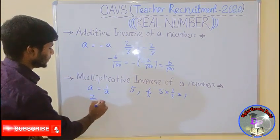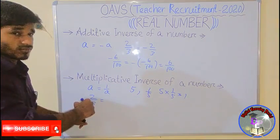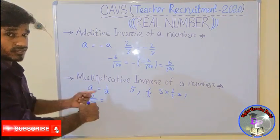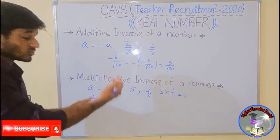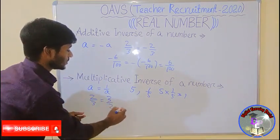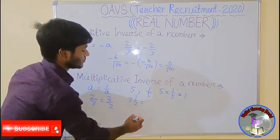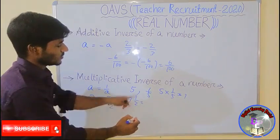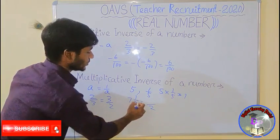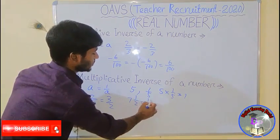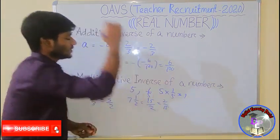So, the multiplicative inverse of 2 by 3 is 3 by 2. For a mixed number like 7 whole 1 by 2, first we convert it: 7 times 2 is 14, plus 1 is 15, so it becomes 15 by 2. Then its multiplicative inverse will be 2 by 15.